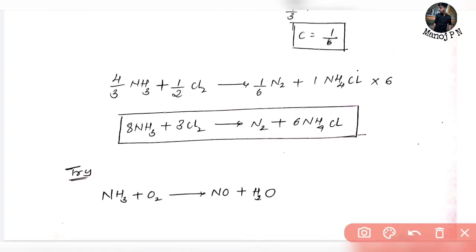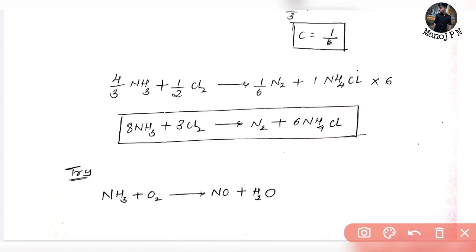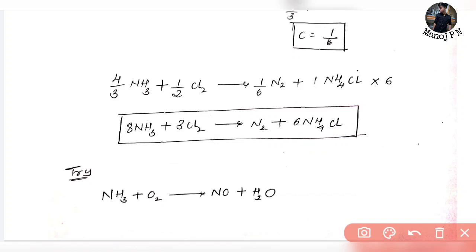If we check this out, it will be balanced — 100% sure. Nitrogen on LHS: 8 NH3 gives 8 nitrogen. On RHS: 1 N2 gives 2, plus 6 NH4Cl gives 6 nitrogen, total 8. Balanced. Hydrogen: 8 × 3 = 24 hydrogen on LHS; 6 × 4 = 24 on RHS. Balanced. Chlorine: 3 Cl2 = 6 Cl on LHS; 6 NH4Cl = 6 Cl on RHS. Balanced. The chemical equation is balanced.